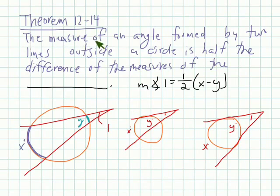Theorem 12-14. This says the measure of an angle formed by two lines outside a circle, and we're going to look at a few different examples of what that looks like, it's half the difference of the measures of the intercepted arcs. So the difference between theorem 12-13 and 14 is this: in 13, the two lines intersect inside a circle and you're talking about the sum of the two arcs. But when an angle is formed outside the circle, you can see this angle is outside, this angle is outside, this angle is outside, then it's going to be the difference of the measures of these two arcs. In this case, it would be x minus y, and then half of that. Not x plus y anymore. It's the difference.